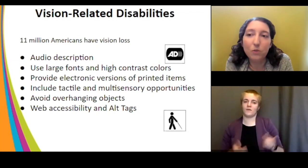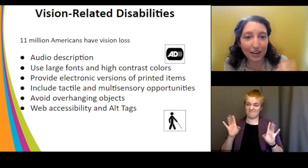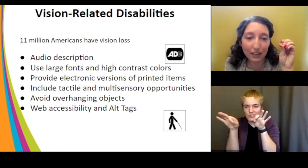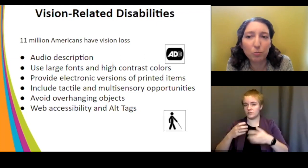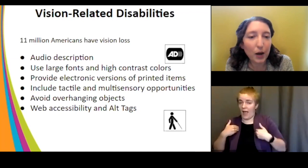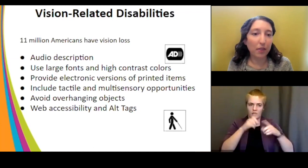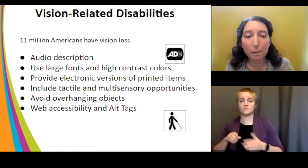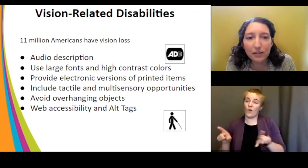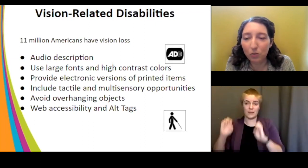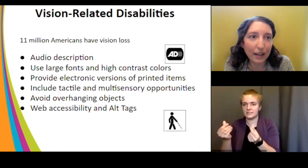Use large fonts and high contrast colors — even without a vision disability, small labels at art museums are difficult. Provide electronic versions of printed materials: many people with low vision can open a file on their own device, enlarge it, change the contrast, and make it readable. This is especially useful for programs and maps. For museums, provide information in more than one way — include tactile and multi-sensory opportunities so people can get information through multiple formats.